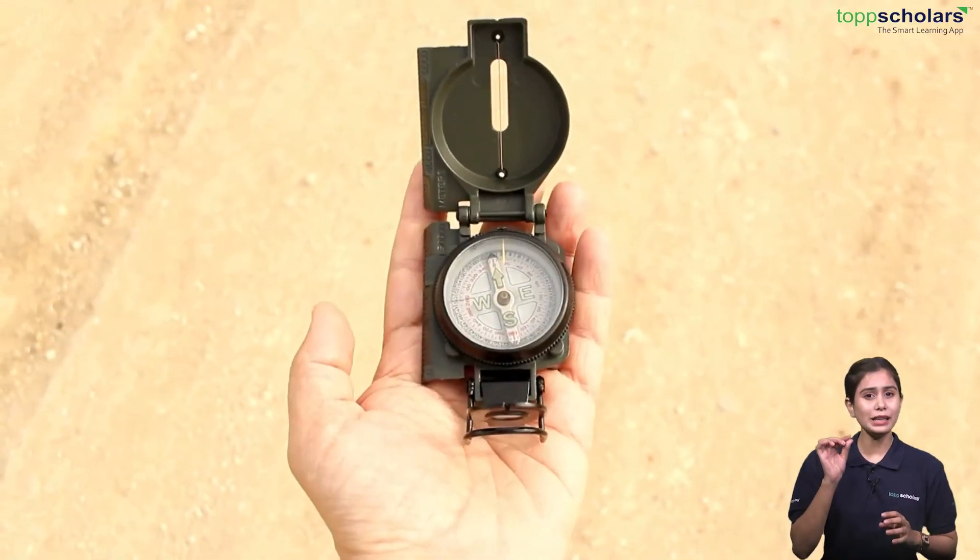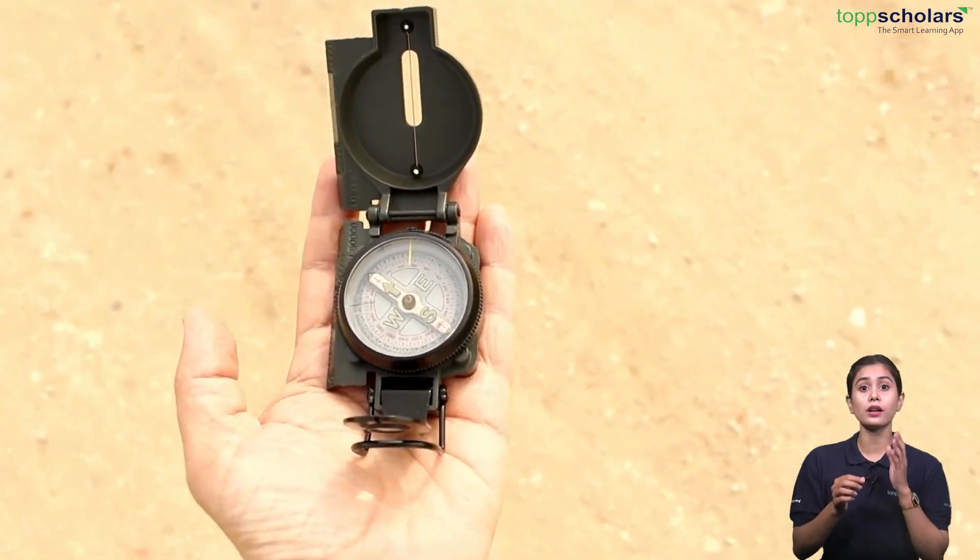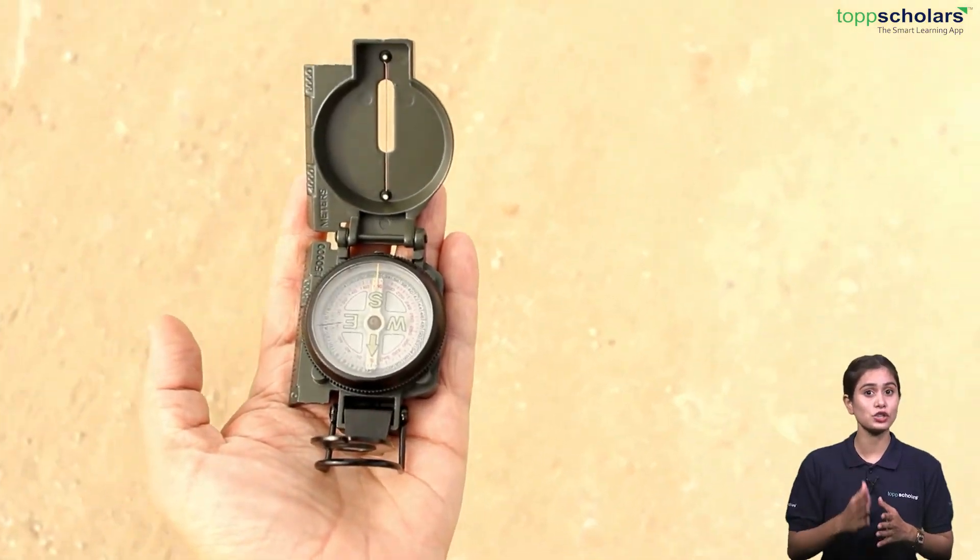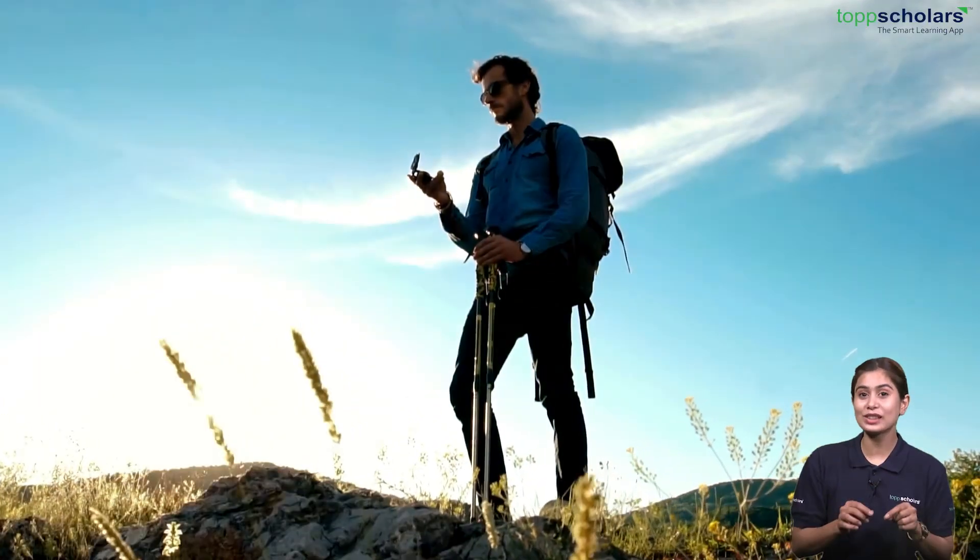The tiny magnet inside a compass is the needle, which orients the north pole towards the earth's north pole, helping travelers determine their direction. The next time you go on an adventure with a compass in hand, it's those magnetic poles doing the job.